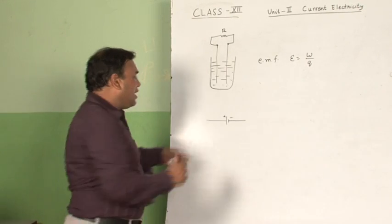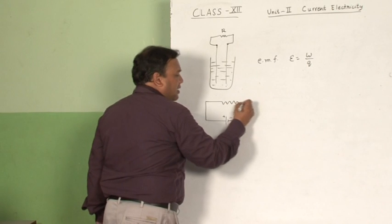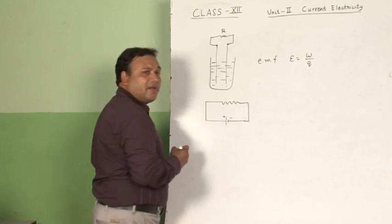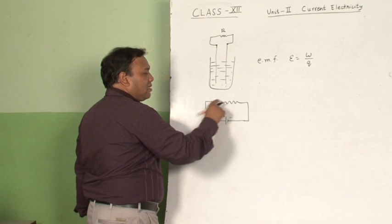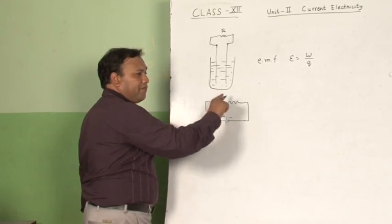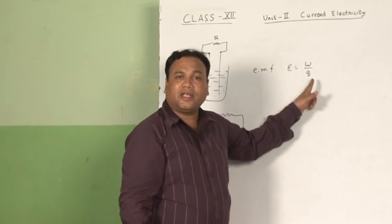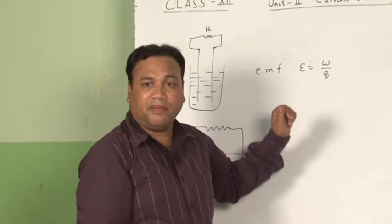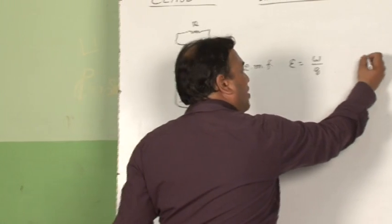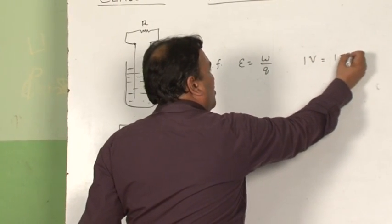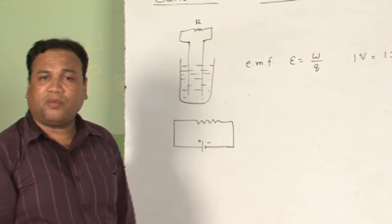When this cell is connected across the external resistance, the cell drives the charges along this circuit. The work done in driving the charges along the circuit is called the EMF. Its SI unit is volt, so 1 volt equals 1 joule per coulomb, same as that of the potential and potential difference.